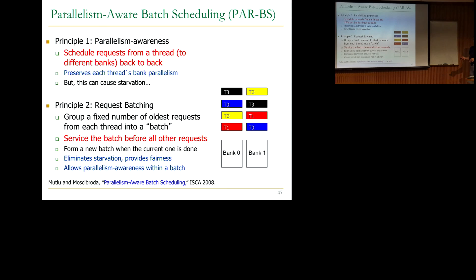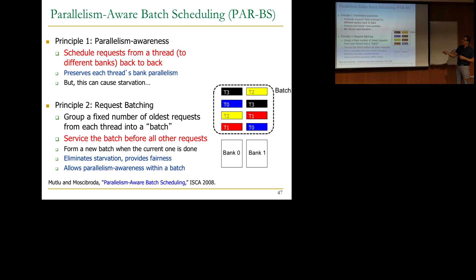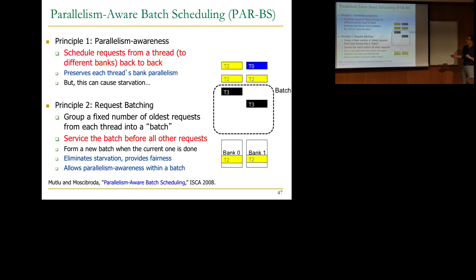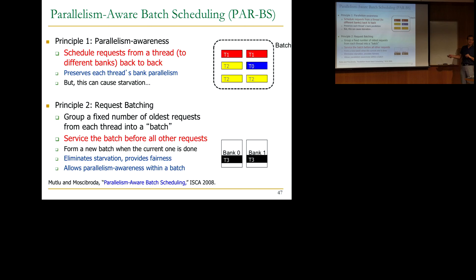Let me give you a pictorial example. We have two banks and four threads. We form a batch based on the requests in the request buffer, and then start scheduling requests in a parallelism-aware manner. We first take thread zero's requests to the different banks and schedule them, then thread one's requests in parallel back to back, then thread two's requests, then thread three's requests back to back. Once the batch is done, we form another batch.